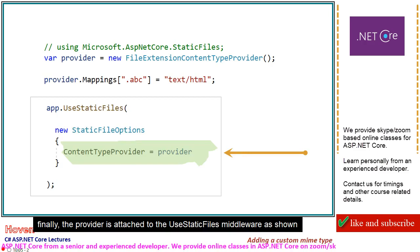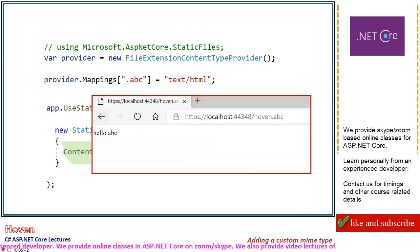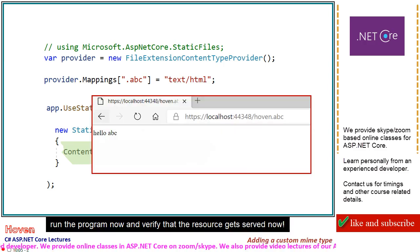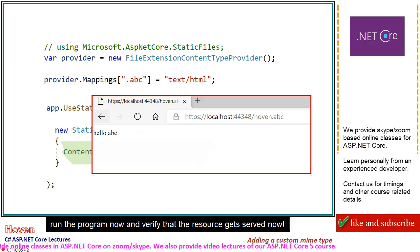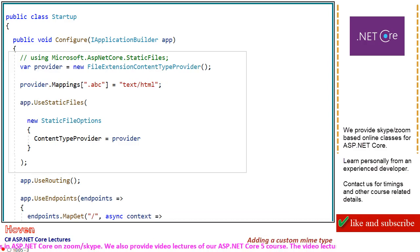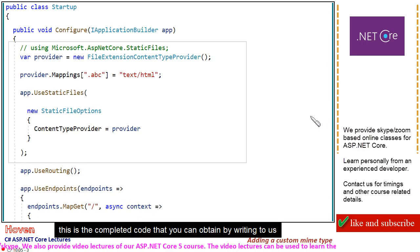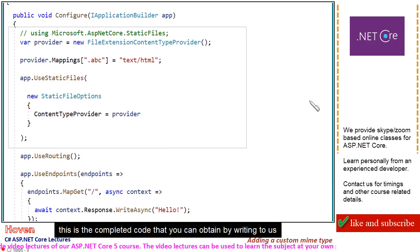Finally, the provider is attached to the UseStaticFiles middleware as shown. Run the program now and verify that the resource gets served. This is the completed code that you can obtain by writing to us.